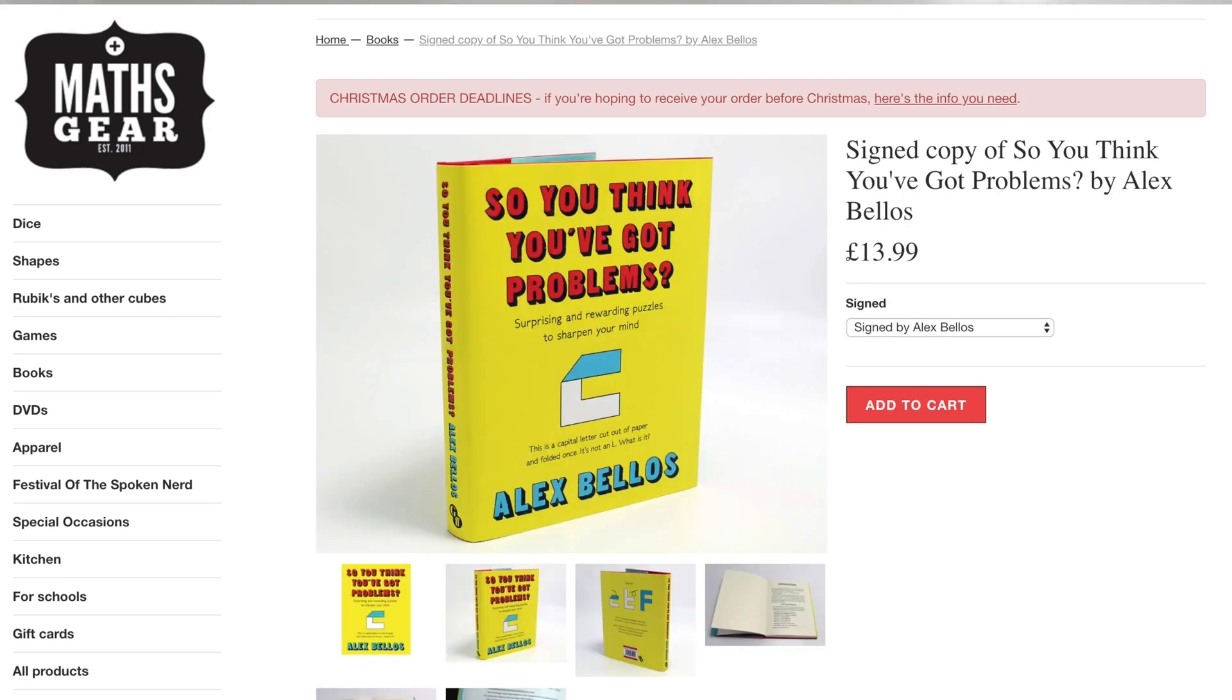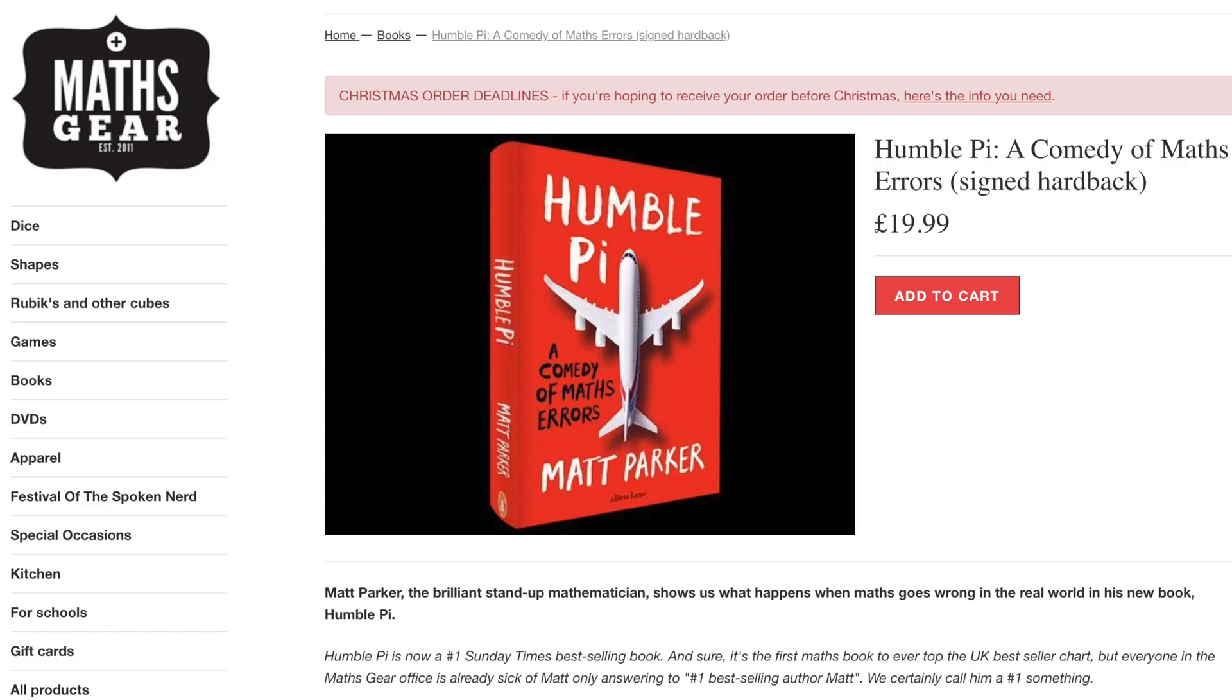We've also got a few new books in. We've got Rob Eastaway's Maths on the Back of an Envelope, Alex Bellos' So You Think You've Got Problems, and a fantastic book on Humble Pie by some awesome math dude.